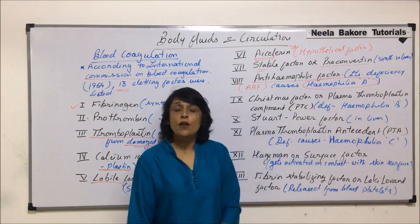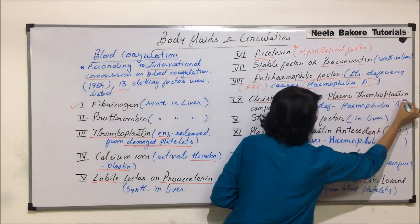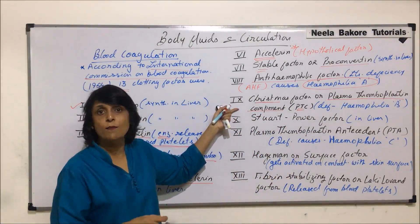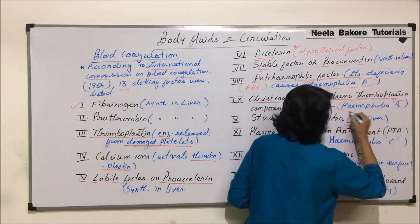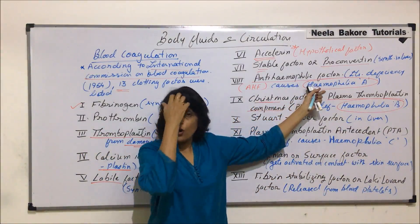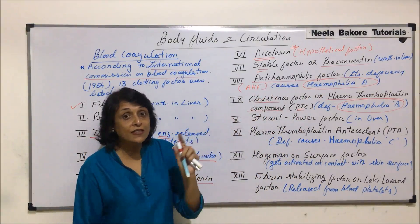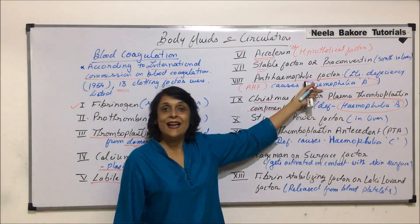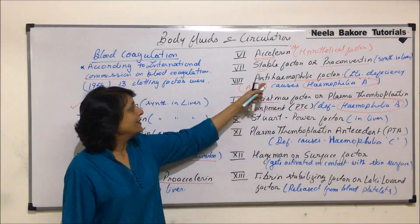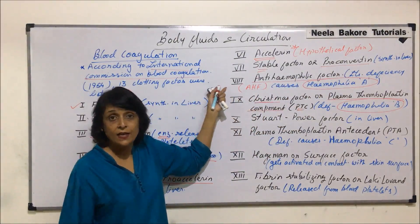The ninth factor is known as Christmas factor, also known as plasma thromboplastin component (PTC). Its deficiency leads to Hemophilia B. Questions can be asked using the factor name or number — for example, hemophilia A is caused by deficiency of anti-hemophilic factor, which is factor 8, so both the name and number are significant.